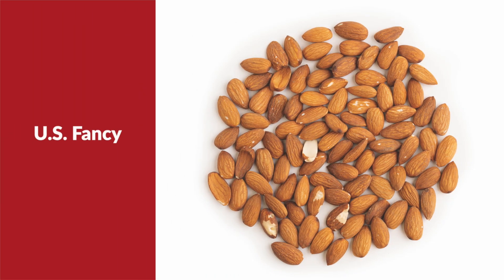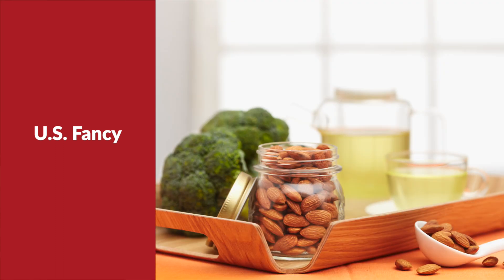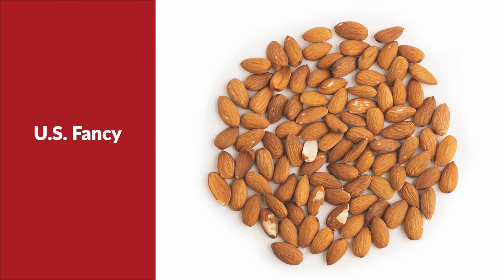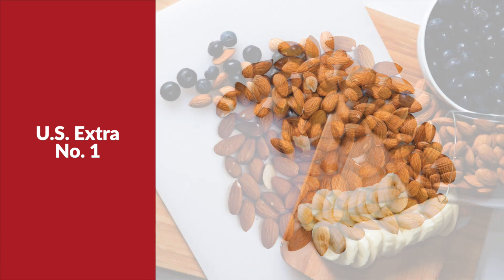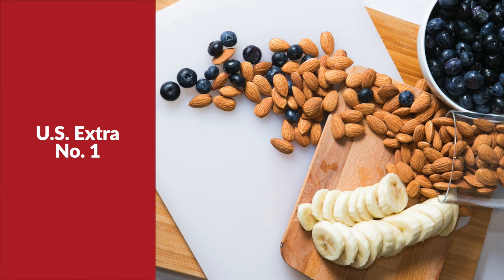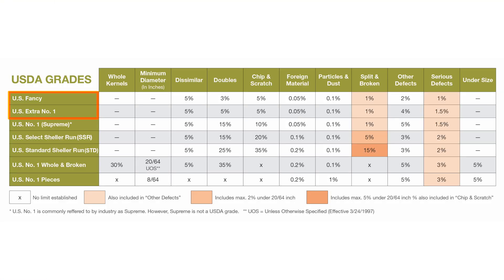U.S. Fancy is the highest grade and often best used in products where the visual appeal of the almond is critical. This grade is not widely used. Similar to U.S. Fancy, U.S. Extra No. 1 is ideal for food applications where the appearance of the almond is very important. The key difference between U.S. Extra No. 1 and U.S. Fancy is found in the scoring of allowable doubles, other defects, and serious defects.